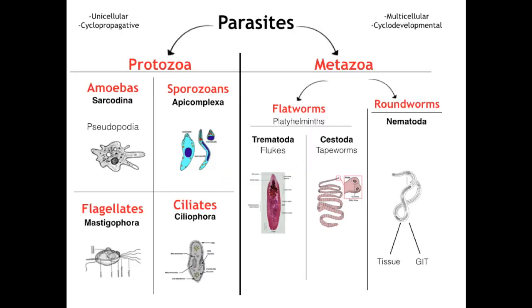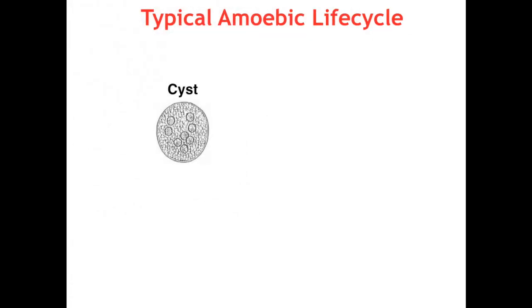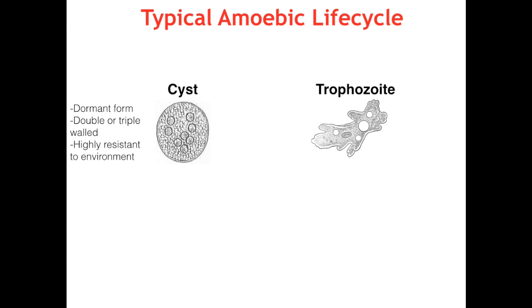We are in the phyloamoeba zone, also known as sarcoidina, who fall here on my overall list of parasites. So let's go over a typical amoeba life cycle which consists of two forms: the cyst and trophozoite. Cysts are the dormant form; they're either double or triple walled and highly resistant to environmental stresses, allowing them to exist outside their host. The trophozoite is the mobile form, which allows for reproduction and feeding, and they are highly adaptable to their environment.